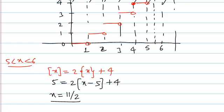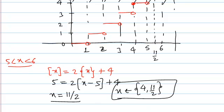By symmetry we can also confirm this by inspection: the midpoint between 5 and 6 is 11/2. So the two points of intersection are x equals 4 and x equals 11/2 — these are the two values of x where the two expressions are equal.